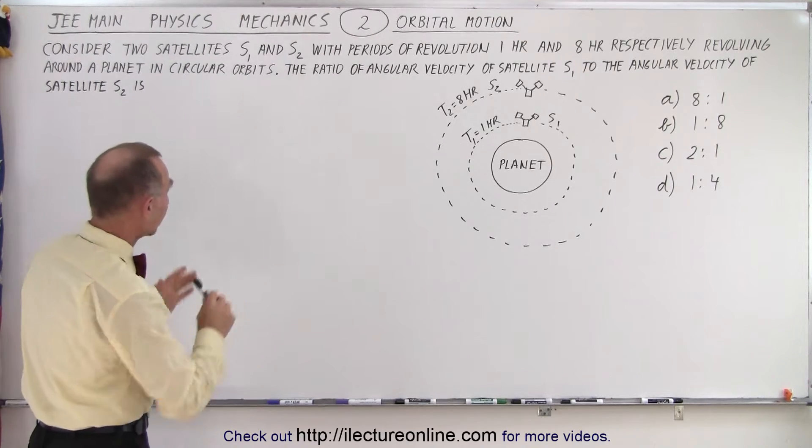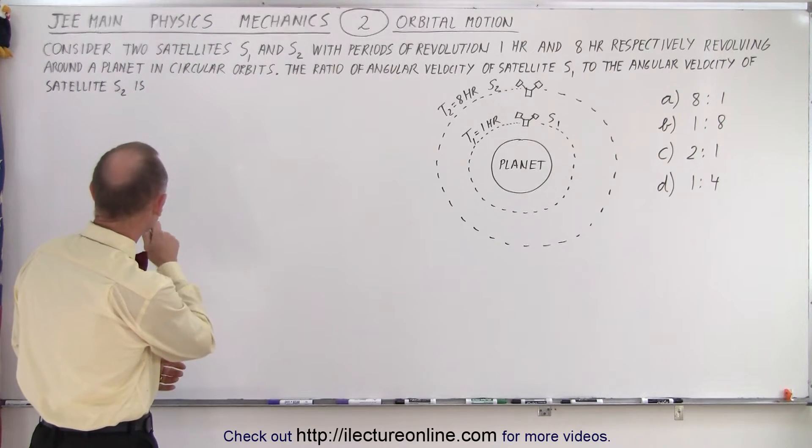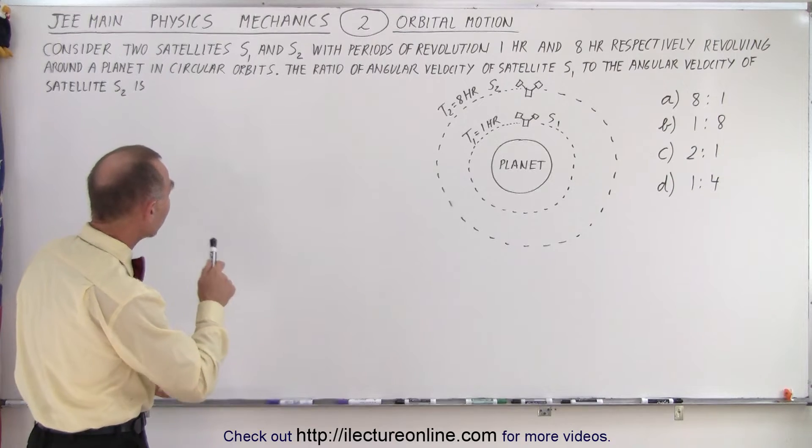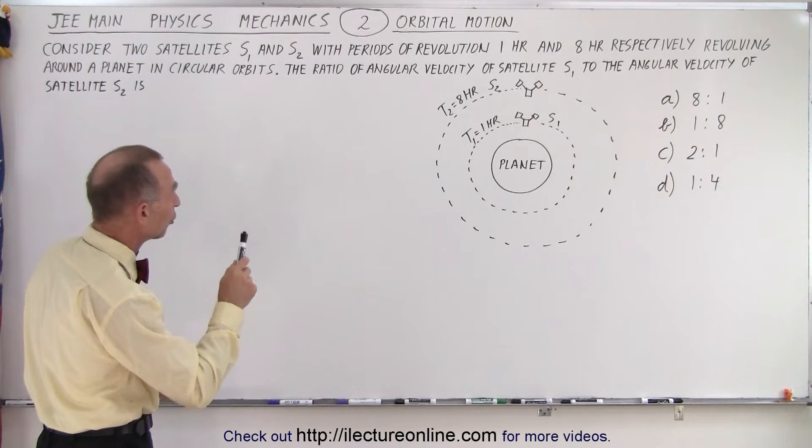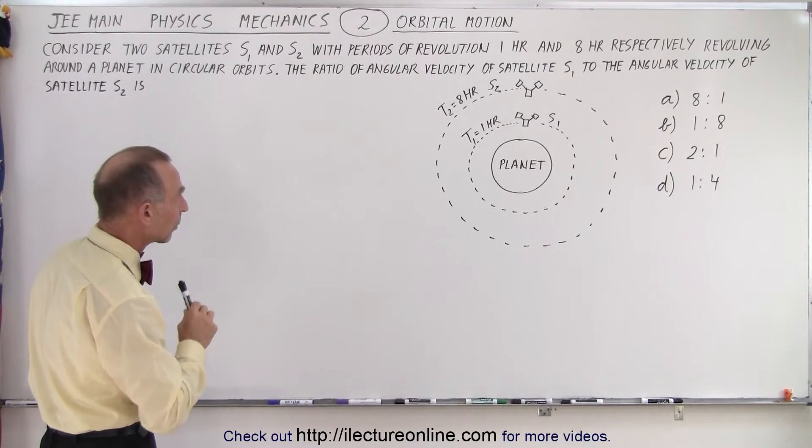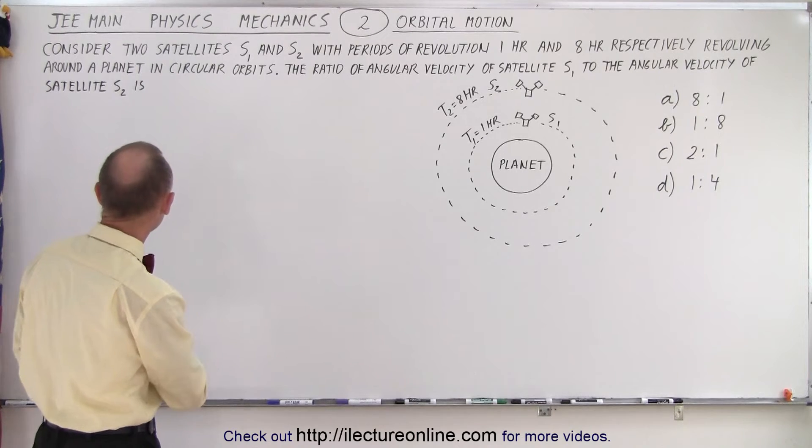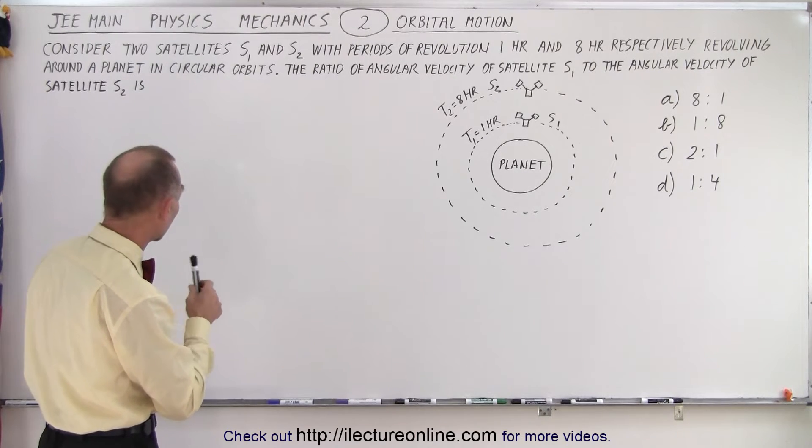So it deals with orbital motion. It says, consider two satellites, S1 and S2, with periods of revolution 1 hour and 8 hours respectively, revolving around a planet in circular orbits.